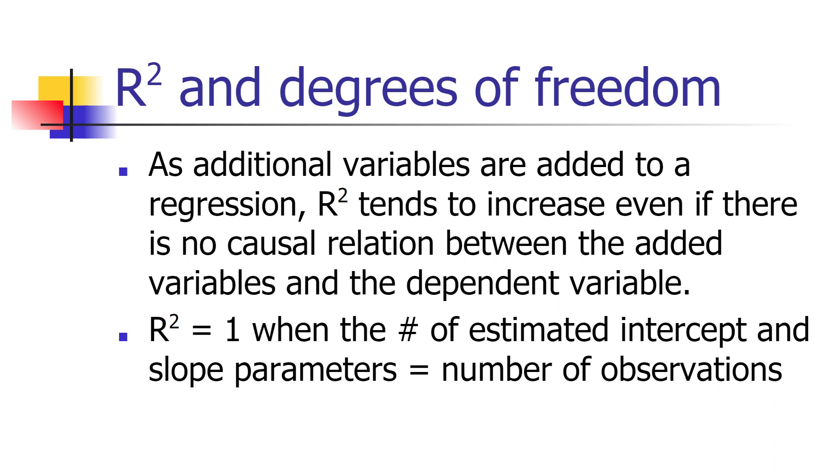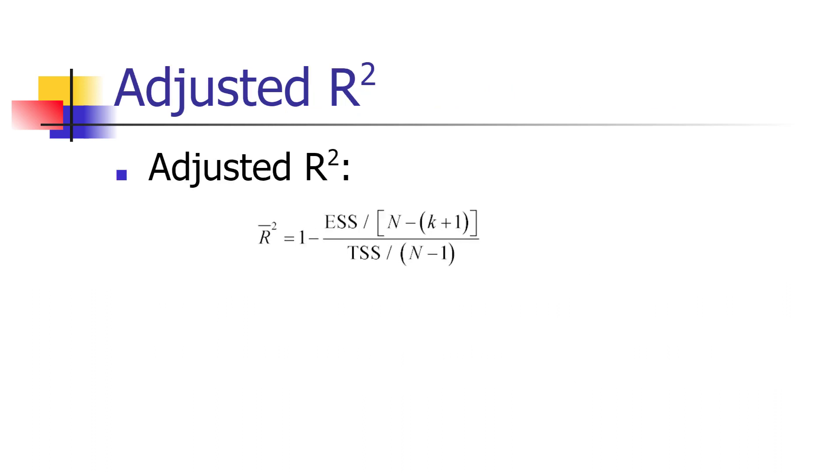So what a number of economists had done is come up with measures of adjusted R-squared. The most common measure is this one, which was originally suggested by Henry Tile, and the adjusted R-squared measure, which is represented by R-squared with a bar over the top, or R-bar-squared.